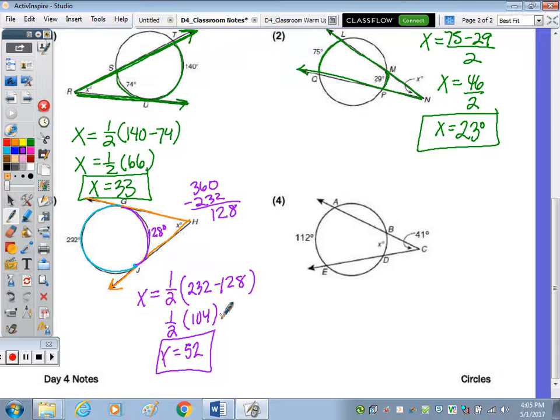And then last, what's different here is that X is not the angle. We have two secants with the two arcs given. It's just X is in a different spot.